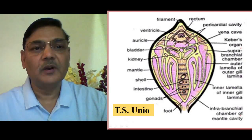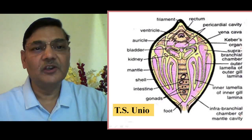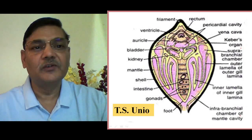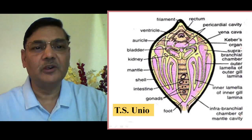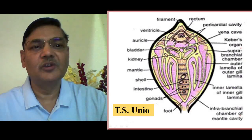Keber's Organ is a paired structure found on the frontal portion of the pericardium. It is triangular in shape, and since it is close to the pericardium, it is also referred to as the pericardial gland. Function-wise, this gland actually secretes nitrogenous waste materials into the pericardial cavity.